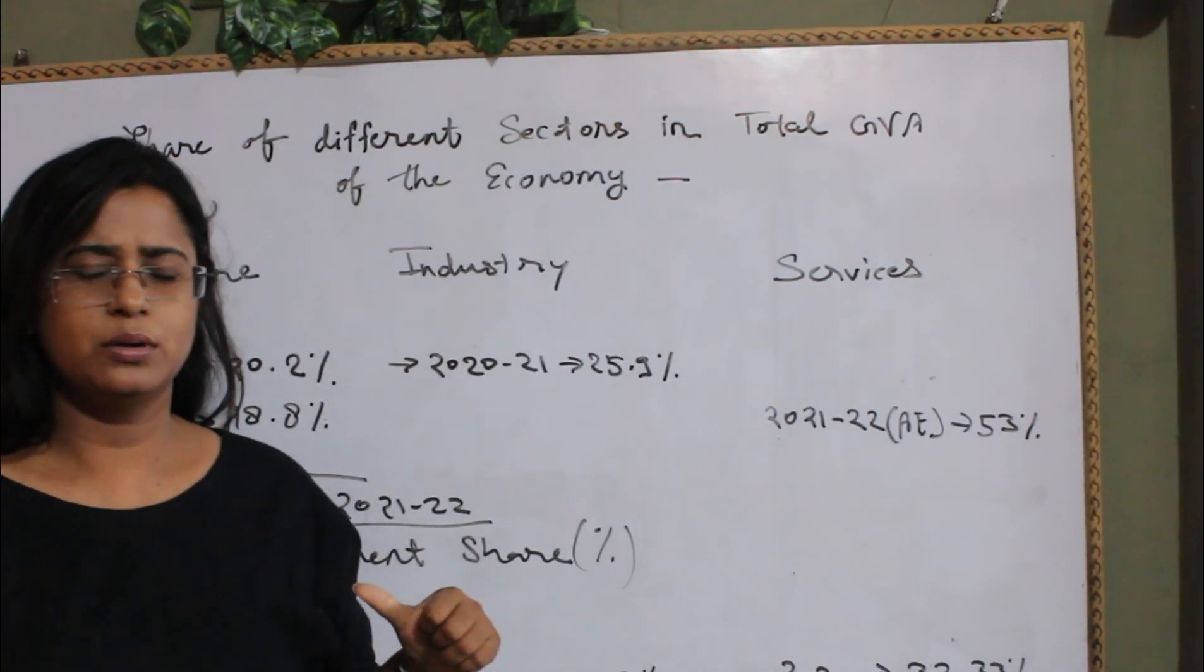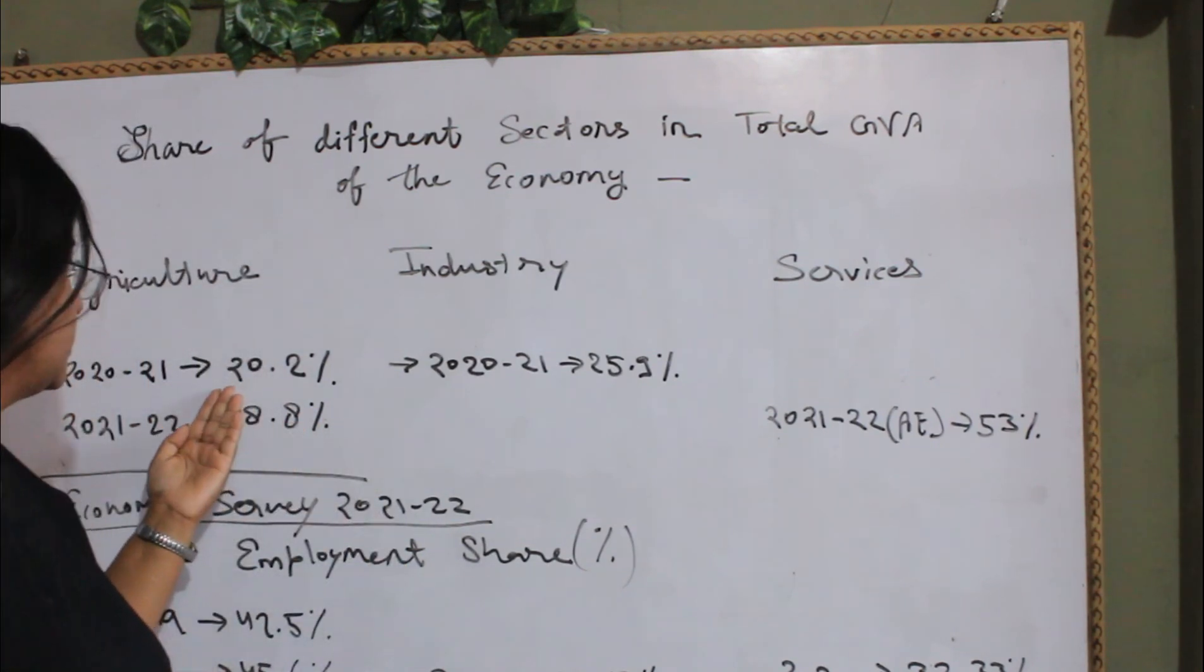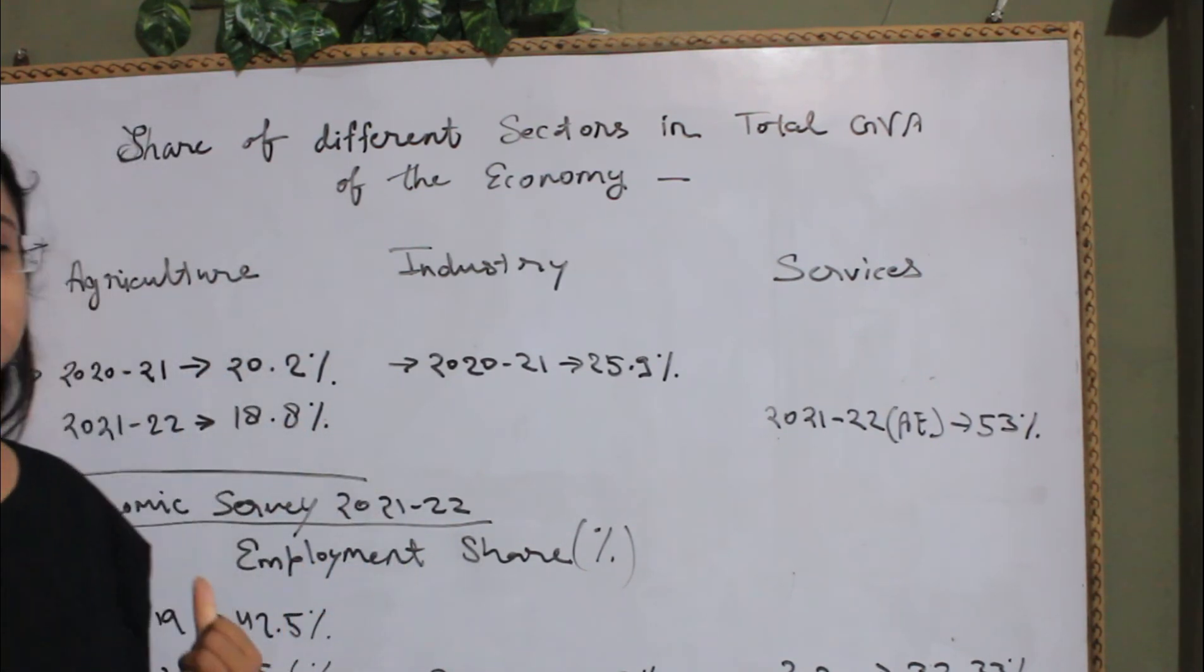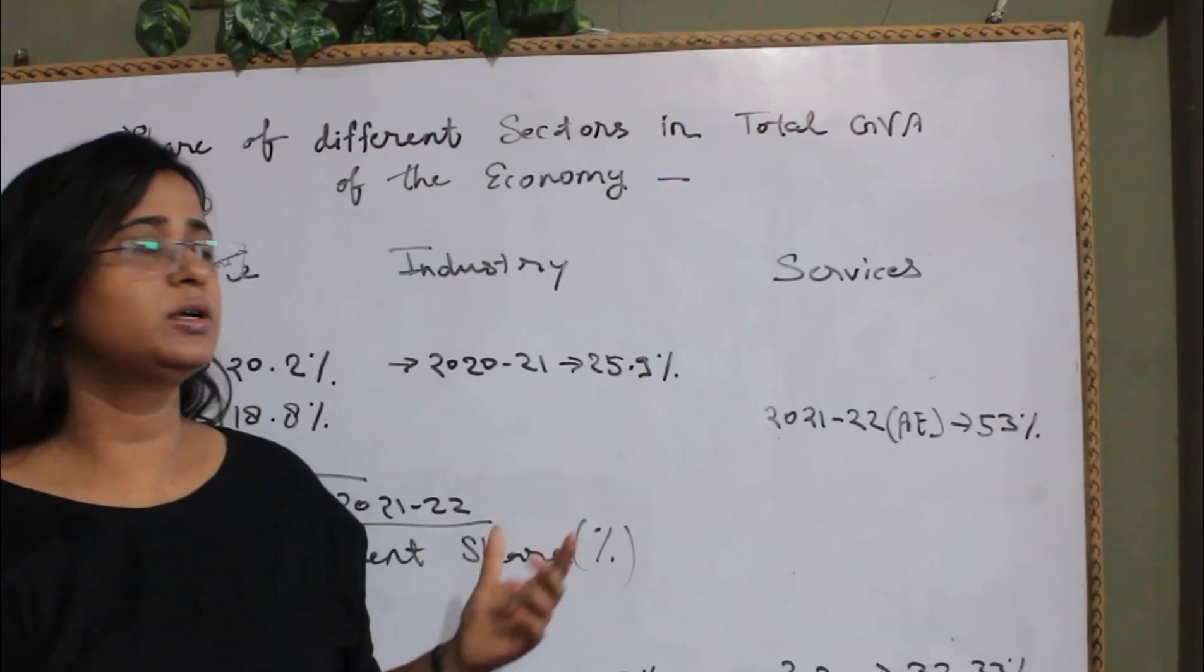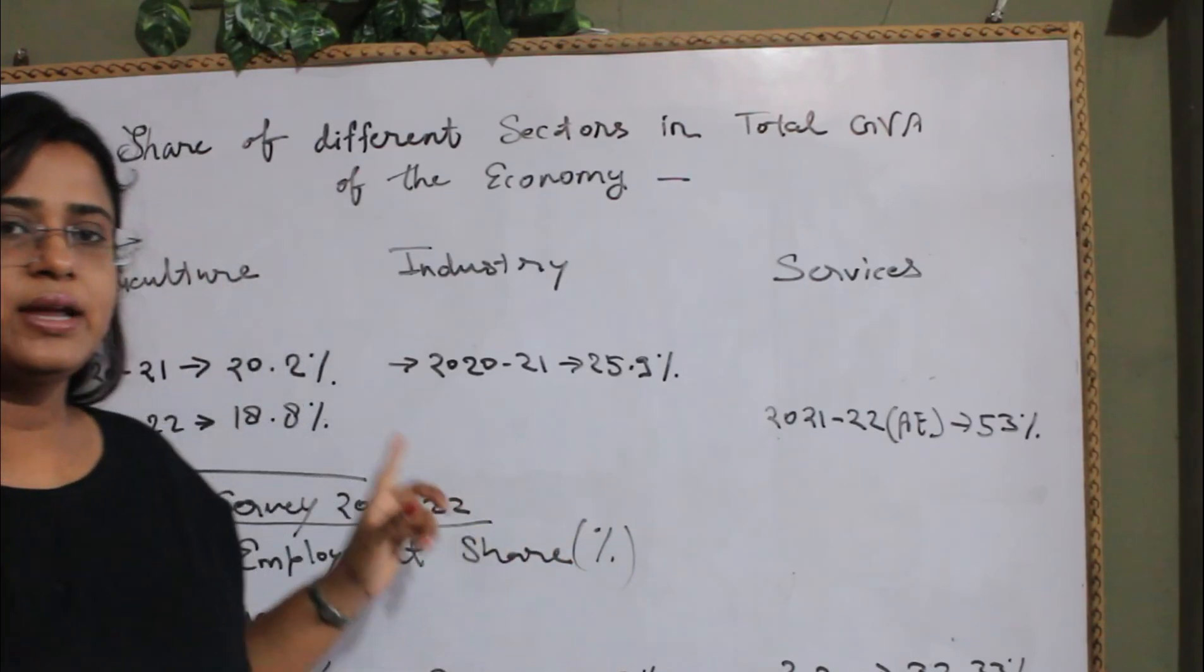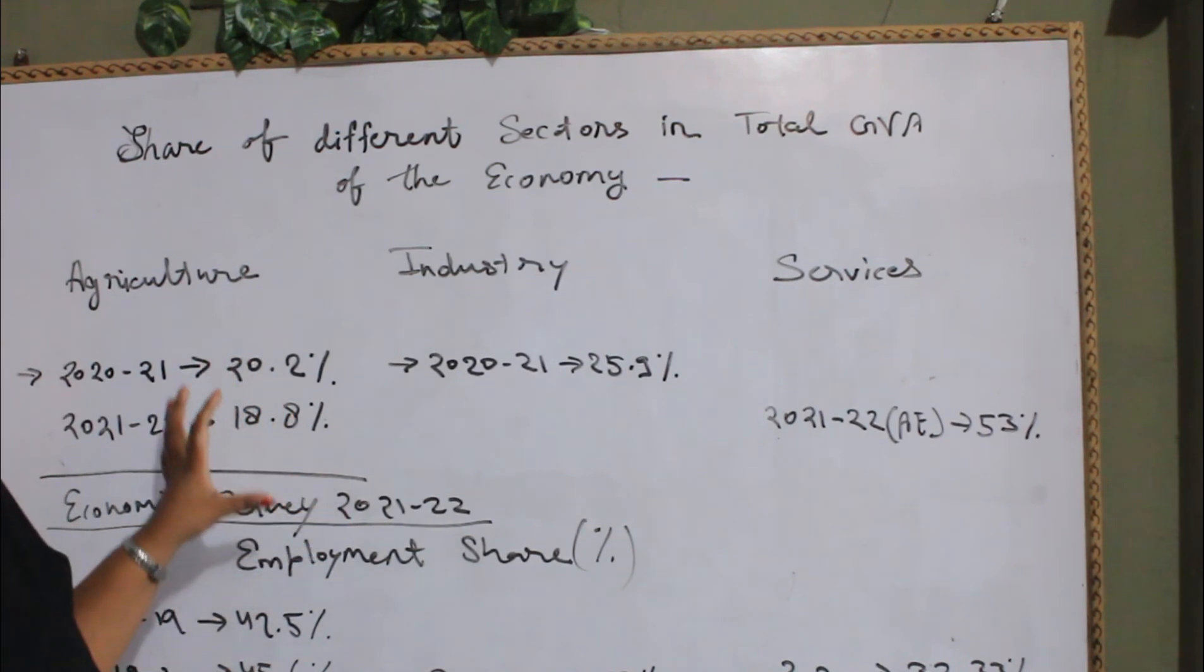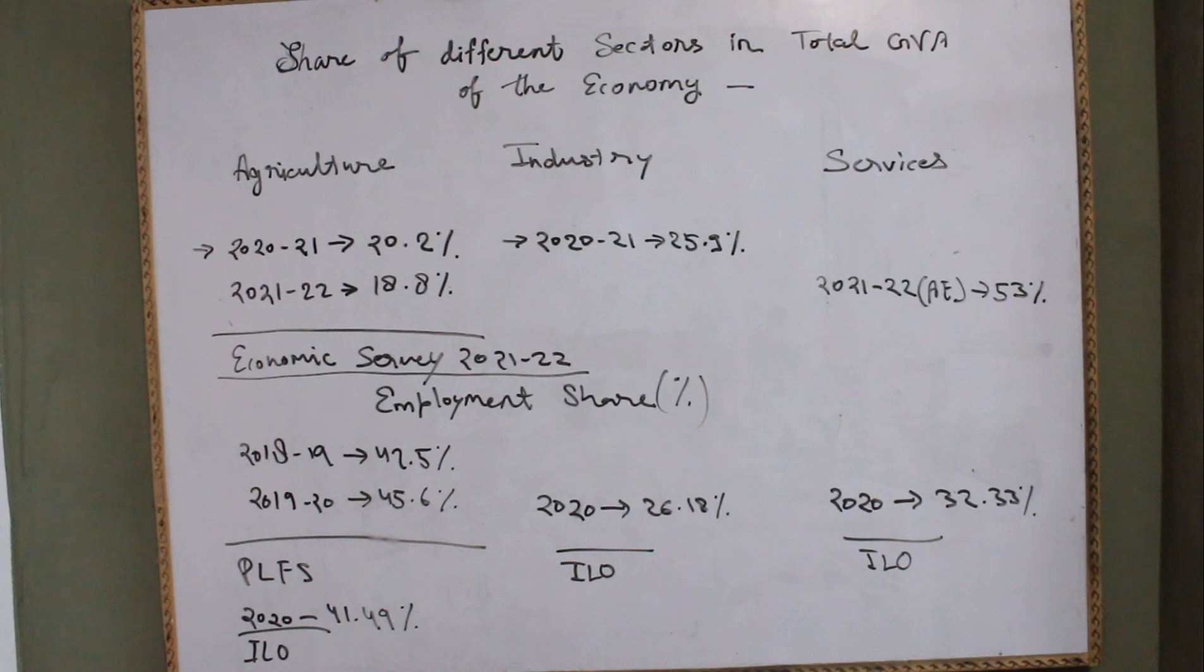And why this has been increased in the previous year? Because you know that we were suffering from the COVID pandemic and the other two sectors were adversely affected to a large extent. And that's why its share seems to increase in the percentage term. But the long-term share of the agricultural sector is 15 and even below this percentage.